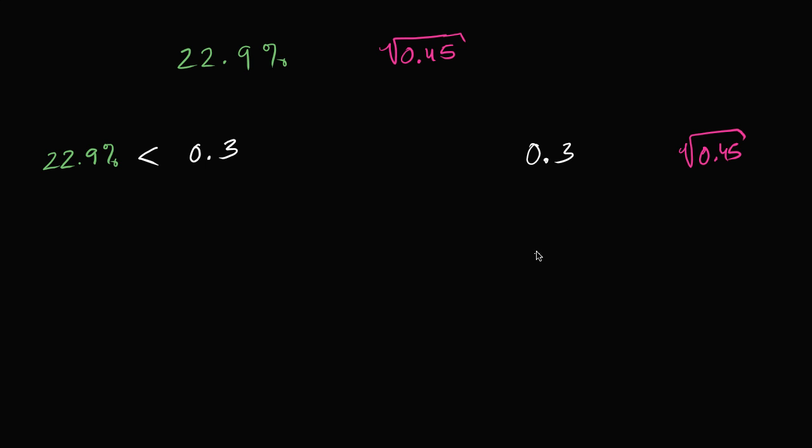Now I could use the squaring technique. What happens if I square each of these quantities? If I square this, 0.3 times 0.3, 3 times 3 is 9, but you're multiplying two things that each have one digit to the right, so you're going to have two digits to the right. So it's going to be 0.09. If you were to square this over here, that's just going to be 0.45.